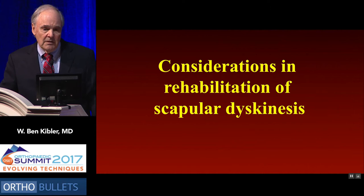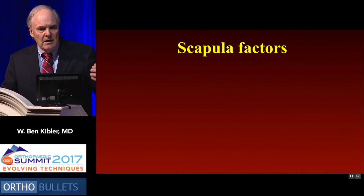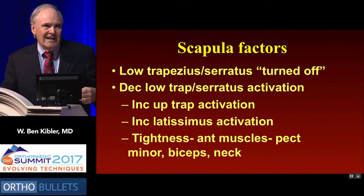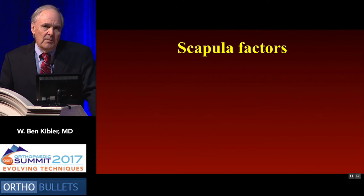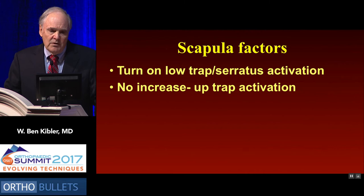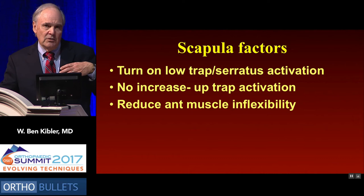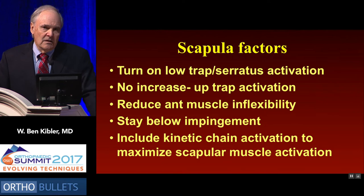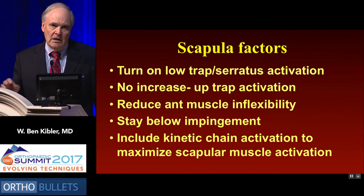For rehabilitation, the low trap and serratus are almost always turned off — inhibited. Associated with that is increased upper trap activation, latissimus dorsi activation, and tightness of the anterior muscles: the pectoralis and the coracoid-based muscles like the biceps. That's your problem with snapping scapula. Therapy involves turning on the low trap and serratus with no increase in upper trap activation, which means you must reduce pec minor tightness first. Stay below the impingement level so you don't create pain or snapping, and activate the kinetic chain and core as you activate the scapula.